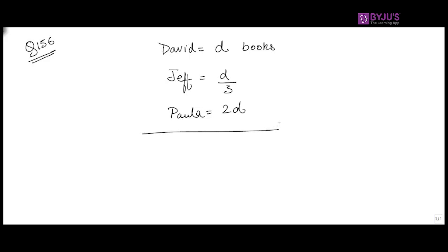What is the total number of books all of them have put together? Just add D plus D by 3 plus 2D. Taking LCM, we get 3D plus D plus 6D, all divided by 3. That gives you 10 by 3 D, which is answer option C.